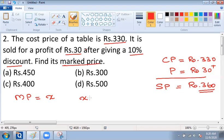That is X, the marked price, 90% of it. This will be the selling price which we have identified is equal to 360.